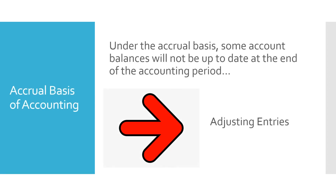Under the accrual basis, some account balances will not be up to date at the end of the accounting period, and that's why we need to make adjusting entries. For example, we have purchased supplies and used some of those supplies, but we haven't made any adjustments to the supplies account. So the amount of supplies on hand is not reflected in that supplies account balance — some of those supplies got used up and that needs to be in supplies expense.